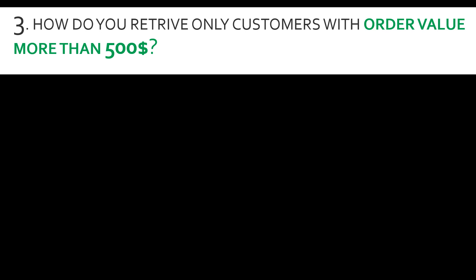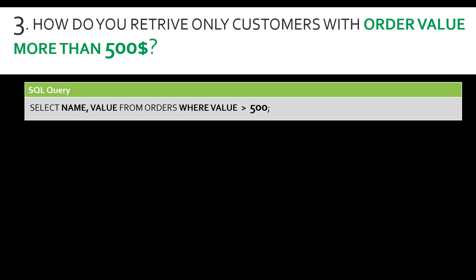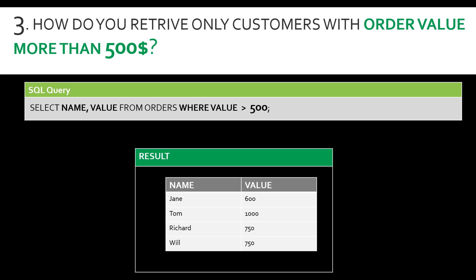Question number three: how do you retrieve only customers with an order value more than 500 dollars? Some conditionality is being placed into the question. The SQL query is SELECT name, value FROM orders WHERE value > 500. This filters out only the rows with an order value more than 500. From our previous seven rows, only four rows are displayed because only four customers have an order value greater than 500.